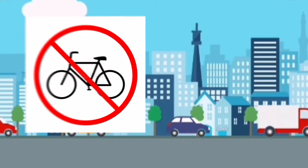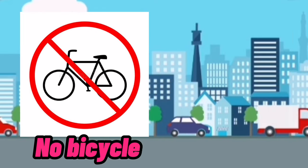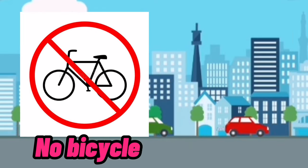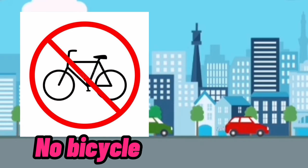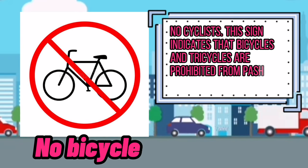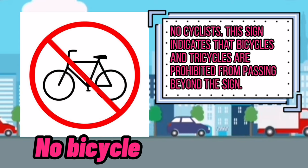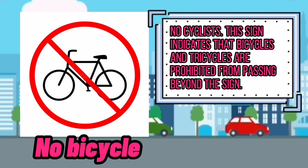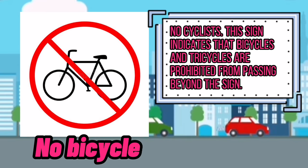No bicycle. No cyclists — this sign indicates that bicycles and tricycles are prohibited from passing beyond the sign.